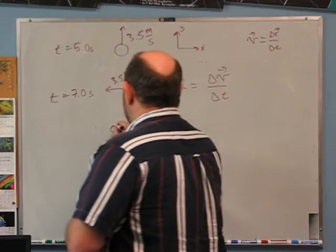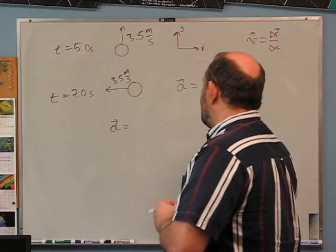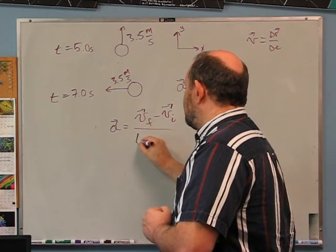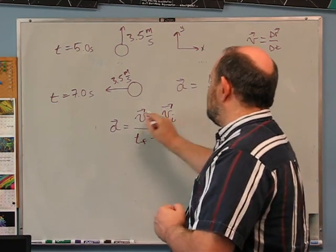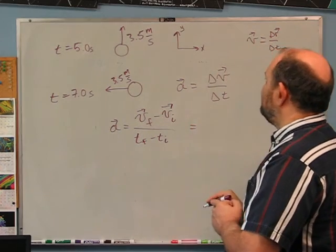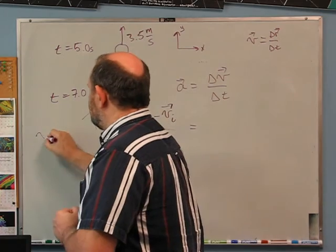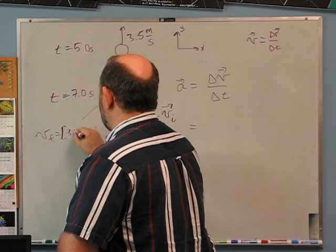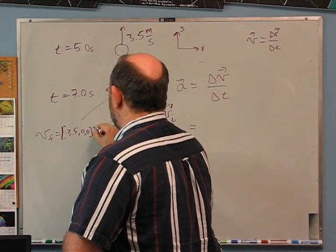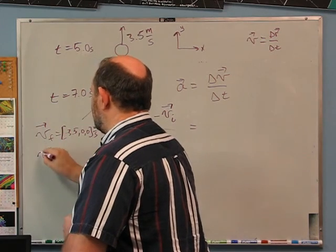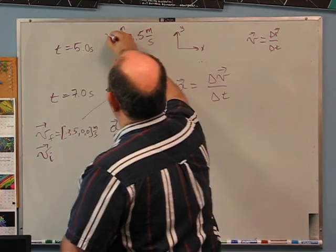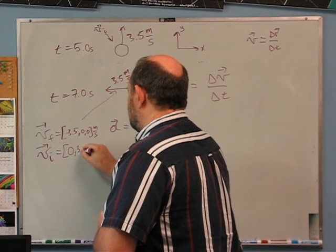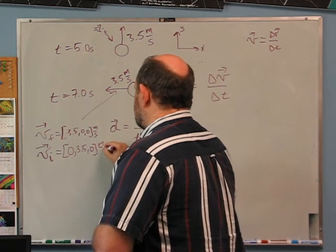The average acceleration is delta v over delta t, which is v_final minus v_initial divided by t_final minus t_initial. v_f is moving in the negative x direction: (-3.5, 0, 0) m/s. v_i is moving in the y direction: (0, 3.5, 0) m/s. Nothing is moving in z.